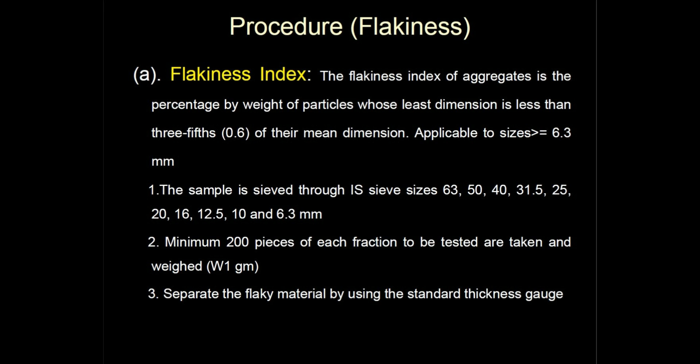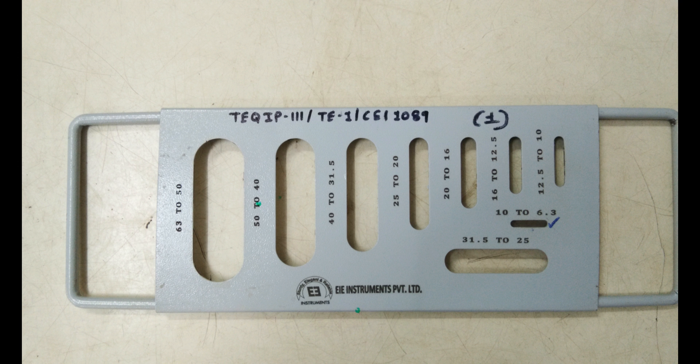To calculate the flakiness index of an entire sample of aggregate, first the weight of each fraction passing and retained on a specific set of sieves is noted. Here you can see the slots on the thickness gauge — the gauge slots correspond to aggregate sieve sizes, marked from 63 to 50 mm down to 10 to 6.3 mm.